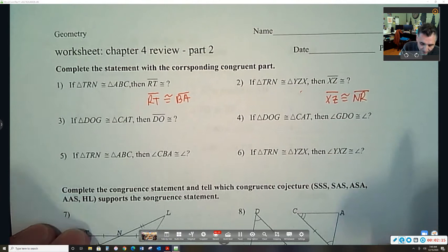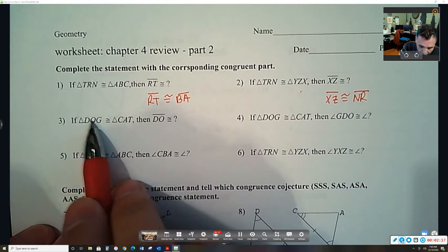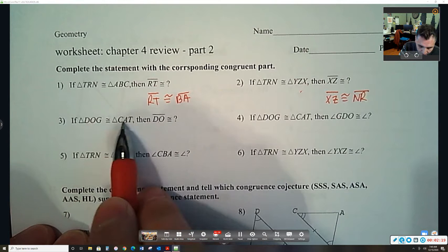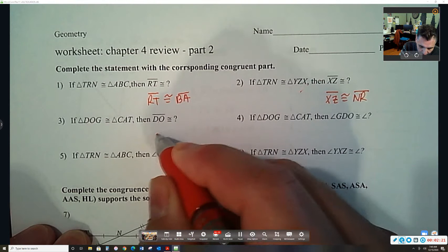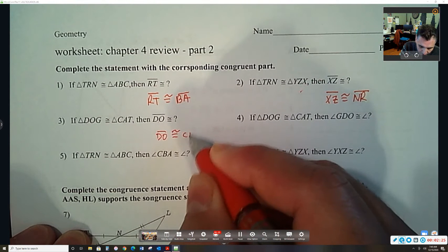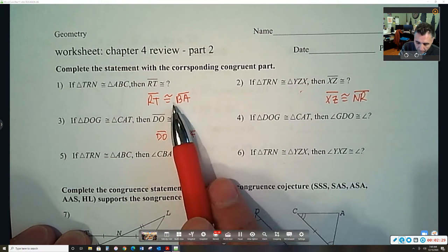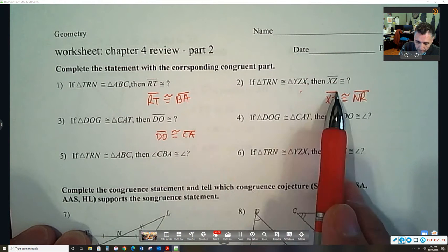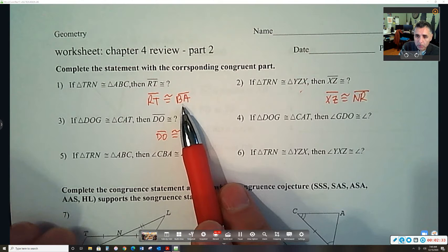So let's do the next one. DO. So DO is kind of in order, just CA. So I know side DO is congruent to side CA. Okay. And you will have one like this on the test. It's going to be multiple choice.